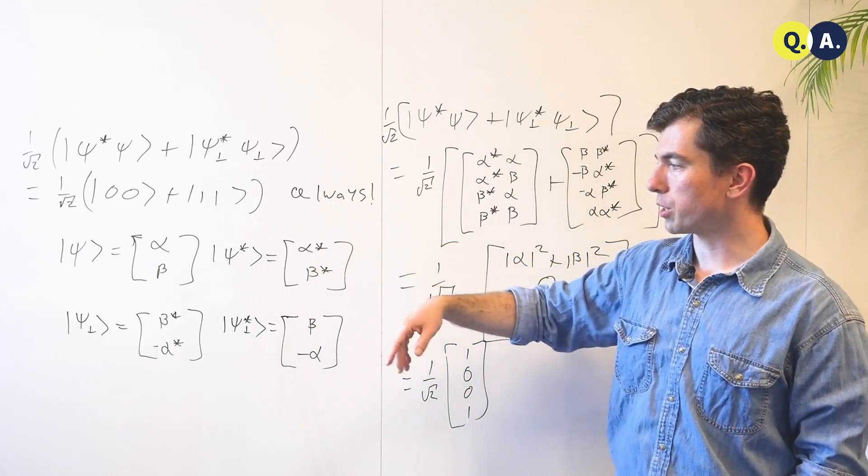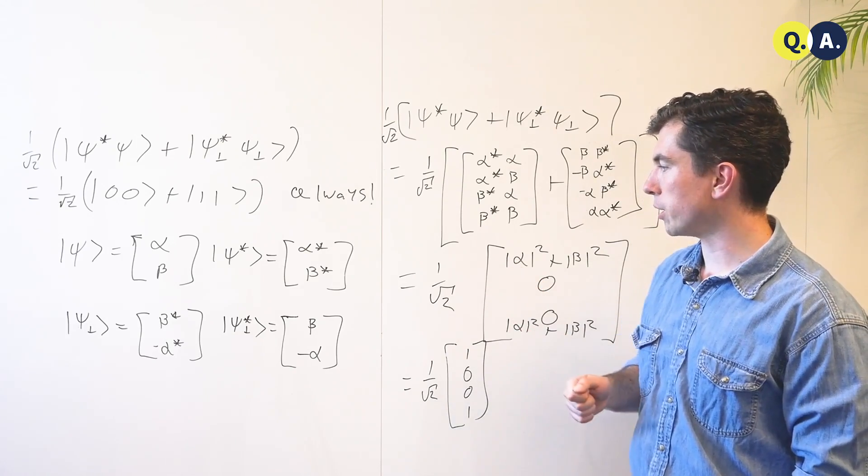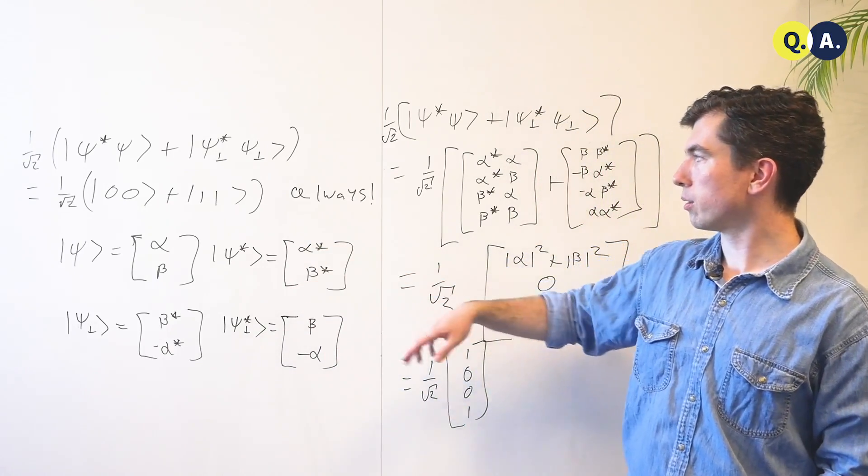psi perp, which is some state which is orthogonal to psi, which I encourage you to check for yourself by taking the inner product, and psi perp star, which is the complex conjugate of the orthogonal state.